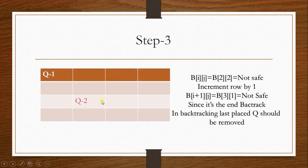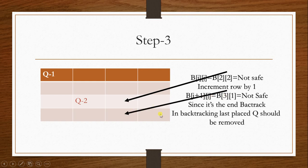Step 3: After placing queen number 2, the column is incremented again. B[2][2] and B[3][1] both refer to unsafe locations, so backtracking must be done. Before backtracking, the queen placed in the previous step should be moved to an incremented position — Q2's location is incremented and it is placed at the new position.